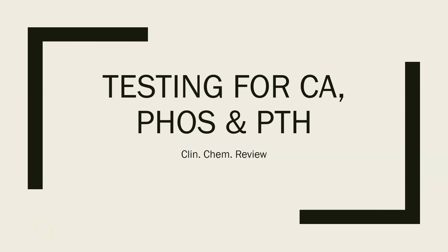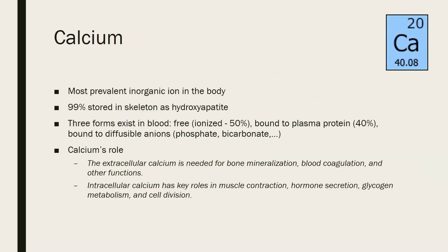This is a clinical chemistry review video on testing for calcium, phosphate, and parathyroid hormone. Calcium is the most prevalent inorganic ion in the body — 99% of it is stored in the skeleton as hydroxyapatite, and the other one percent is found in blood and inside the cells.